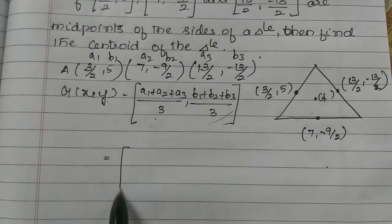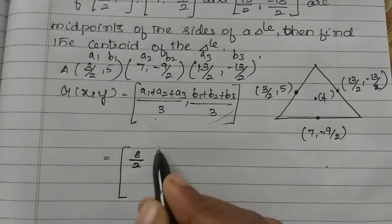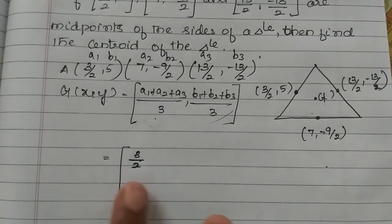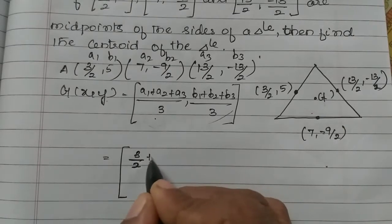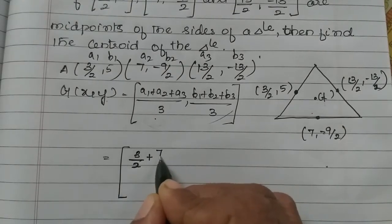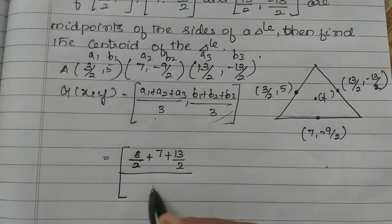Now, we will change the answer. So, a1 plus a2 by 2, plus a2 plus 7, then a3 plus 13/2 divided by 3.